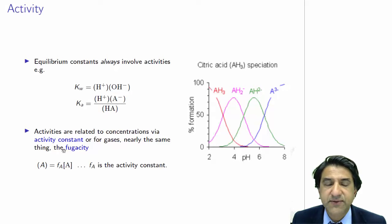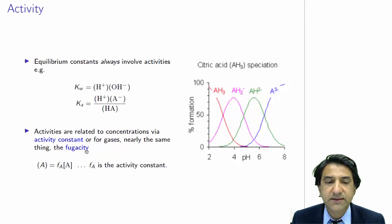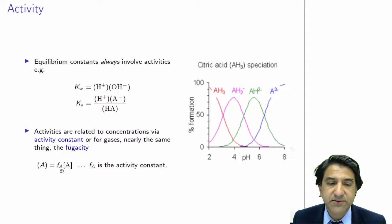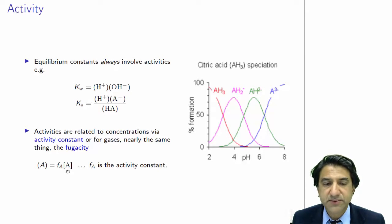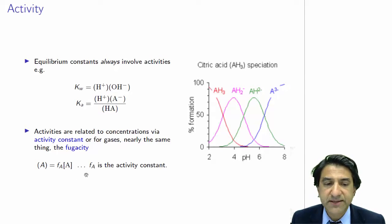Activities are related to concentrations via activity constants, or for gases nearly the same thing — the fugacity. The activity is equal to the fugacity or the activity constant, this number FA, sometimes also called gamma A, times the concentration. So the activity is proportional to the concentration, and it's equal to the concentration at low concentration, mainly because the fugacity or activity constant becomes equal to one at low concentration.